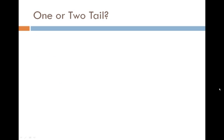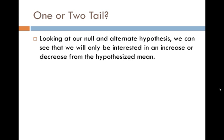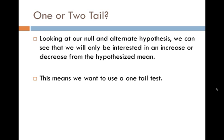Next, we'll look at if this should be a one or a two tail test. Looking at our null and our alternate hypothesis, we can see that we're really only interested in an increase or decrease from the hypothesized mean. Now what that is going to tell us is that we really want to use a one tail test.